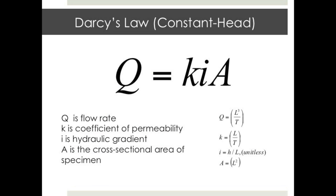For the constant head test, Darcy's law is the basis of theory behind calculating the coefficient of permeability K. Darcy's law is expressed in units of flow rate — length cubed per time — as Q equals KIA, where Q is the flow rate, I is the hydraulic gradient which is the hydraulic head divided by the sample length L, A is the cross-sectional area of the sample from inner diameter measurements, and K is the coefficient of permeability in units of length per time. Darcy's law is a simple means of calculating the coefficient of permeability unique to our test soil.